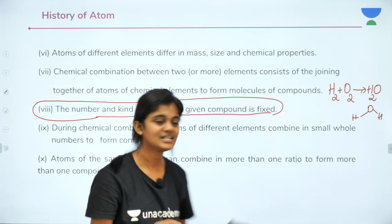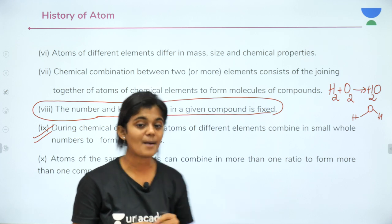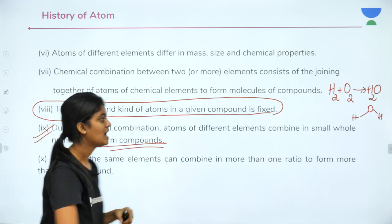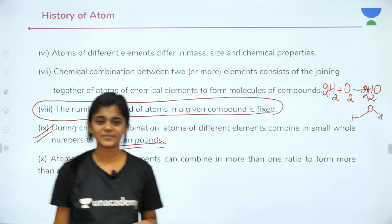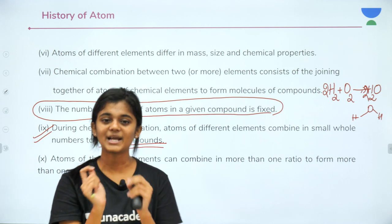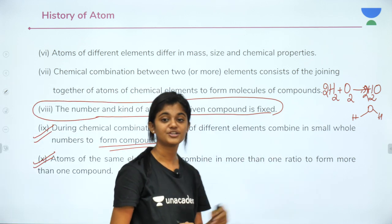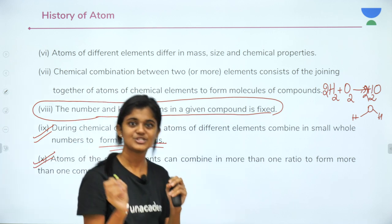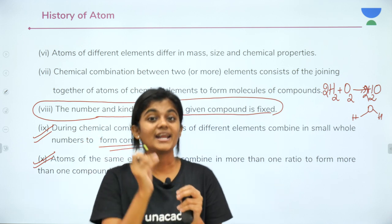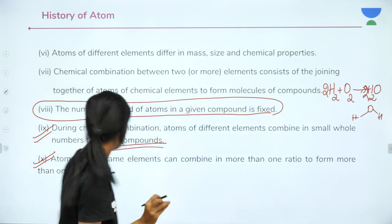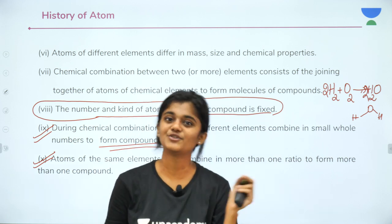The seventh postulate: during chemical combination, atoms of different elements combine in small whole numbers to form compounds — for example, 2H₂ + O₂ → 2H₂O. The last postulate: atoms of the same elements can combine in more than one ratio to form more than one compound. We will explore this further in the next lecture when we study more elements and the different kinds of compounds they form.